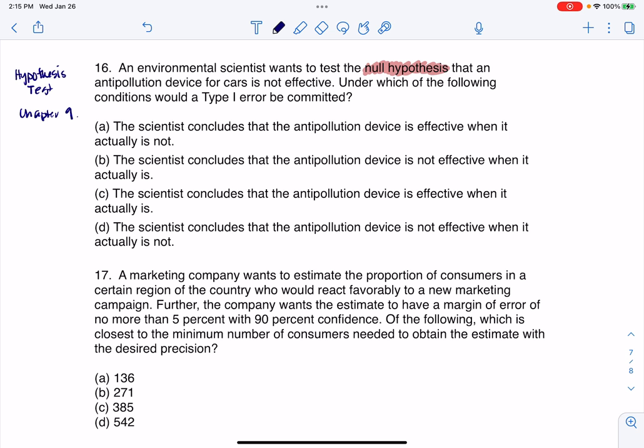so we want to test the null. Okay, so it's telling me the null is that the device is not effective. So let me write that down. So H0, in this case, would be device not effective. So the complement to that for the alternate has to be that the device is effective. So H sub A has to be that the device is effective.